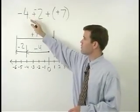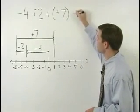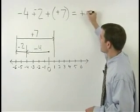So negative 4 plus negative 2 plus positive 7 is positive 1.